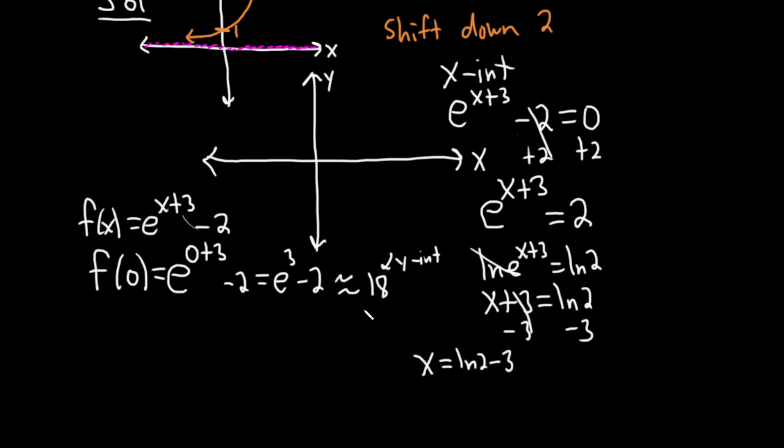ln 2 is, it's 0.69. So roughly 0.69. So ln 2 - 3 is roughly negative 2.3. So that's going to be the x-intercept. I feel like I need to make my graph bigger. So let me just do it again. So here's the final answer.